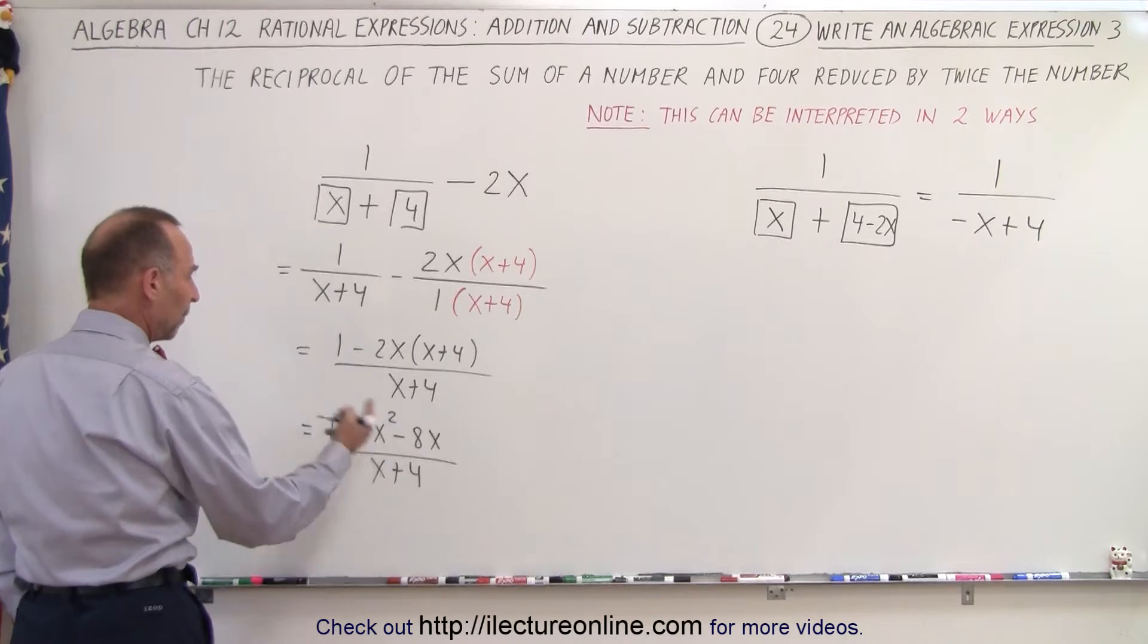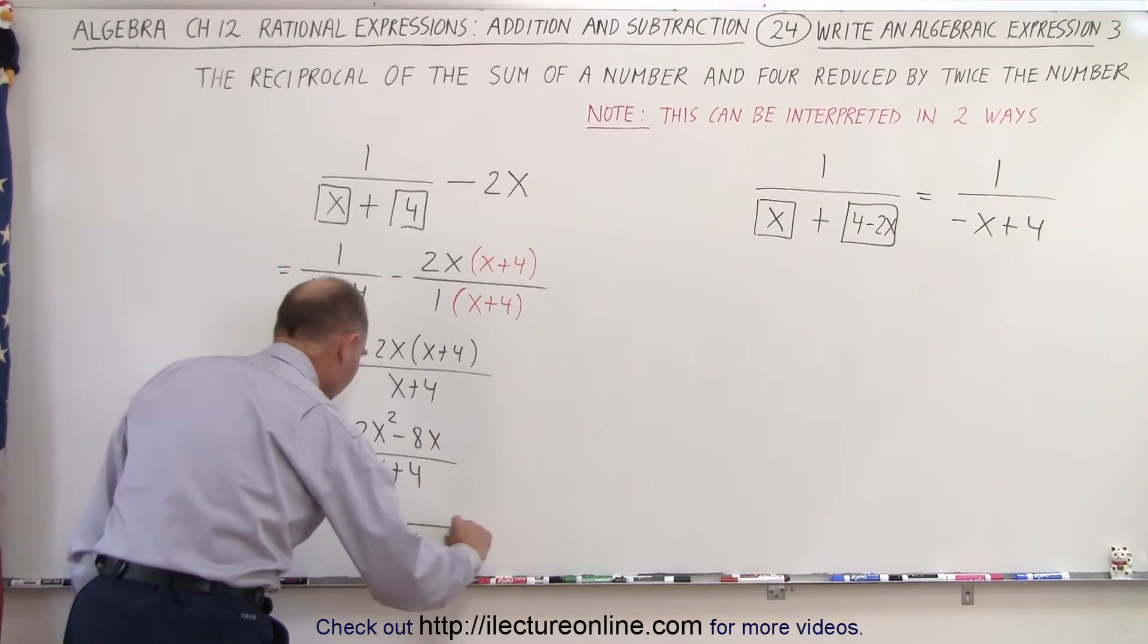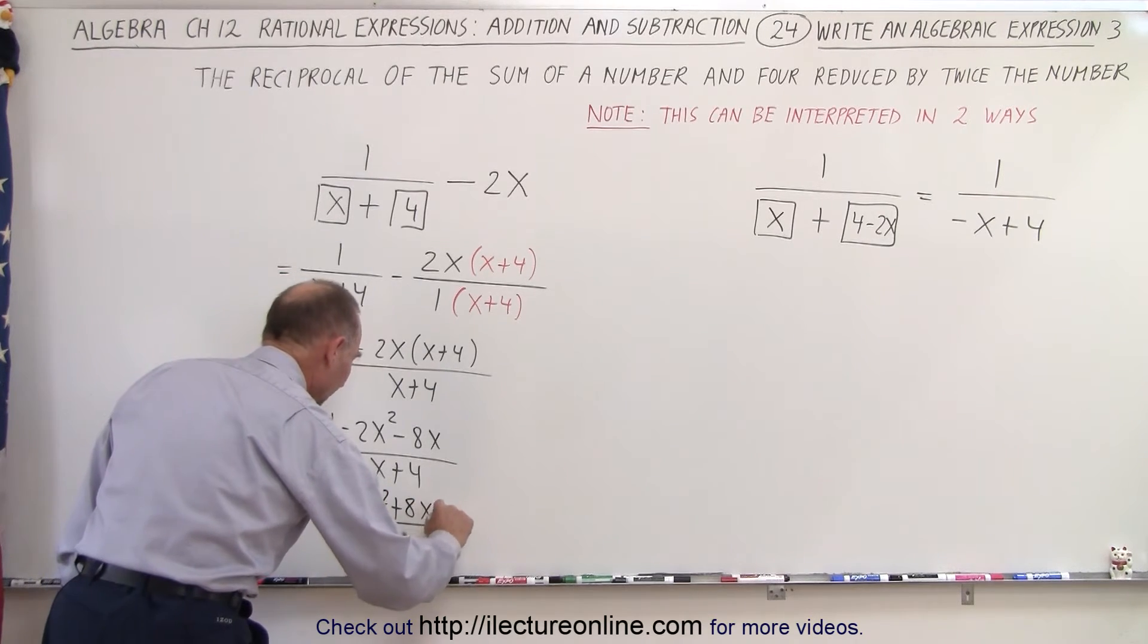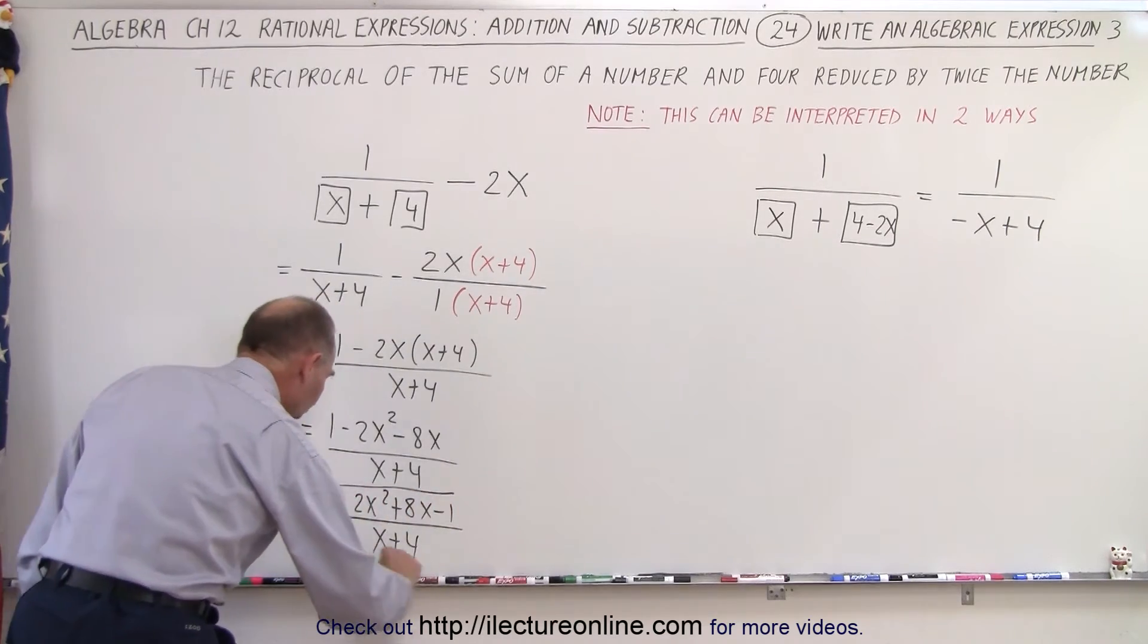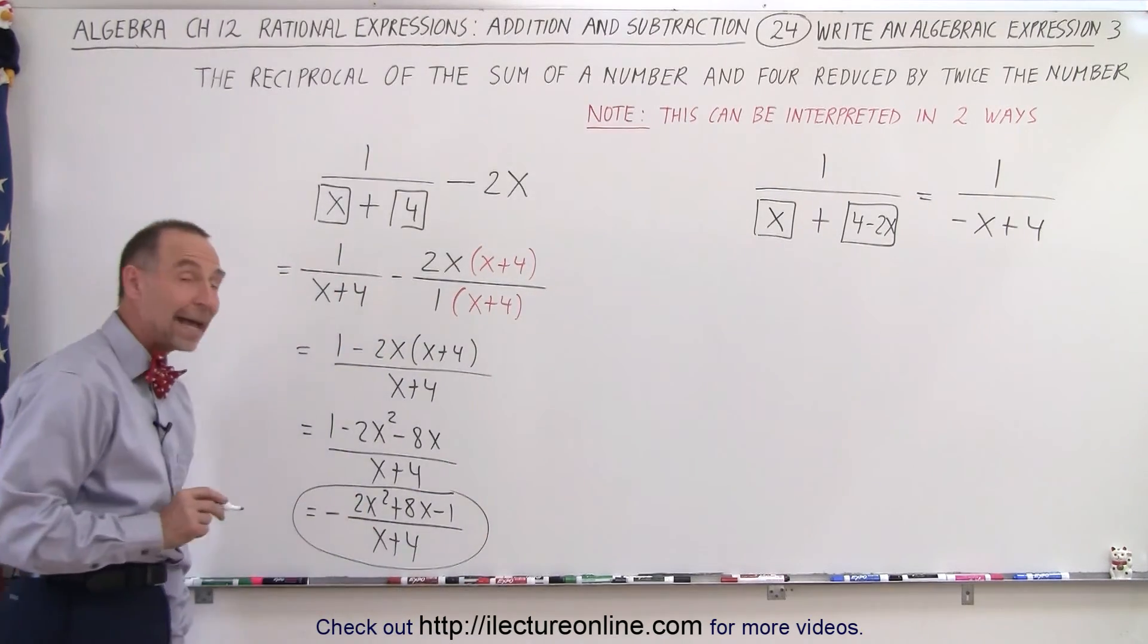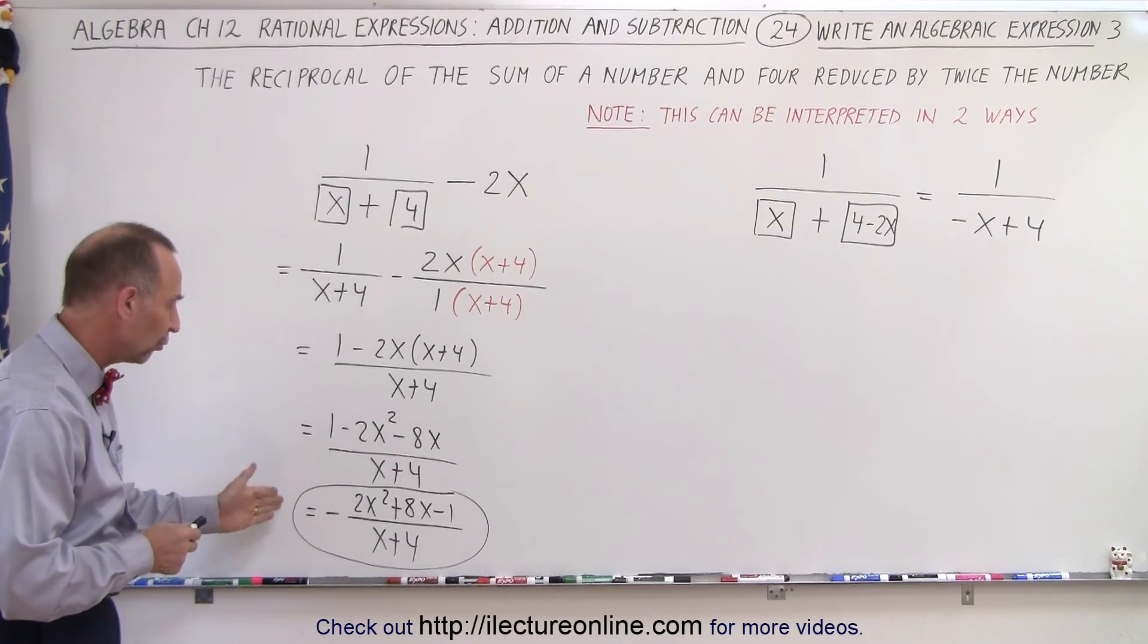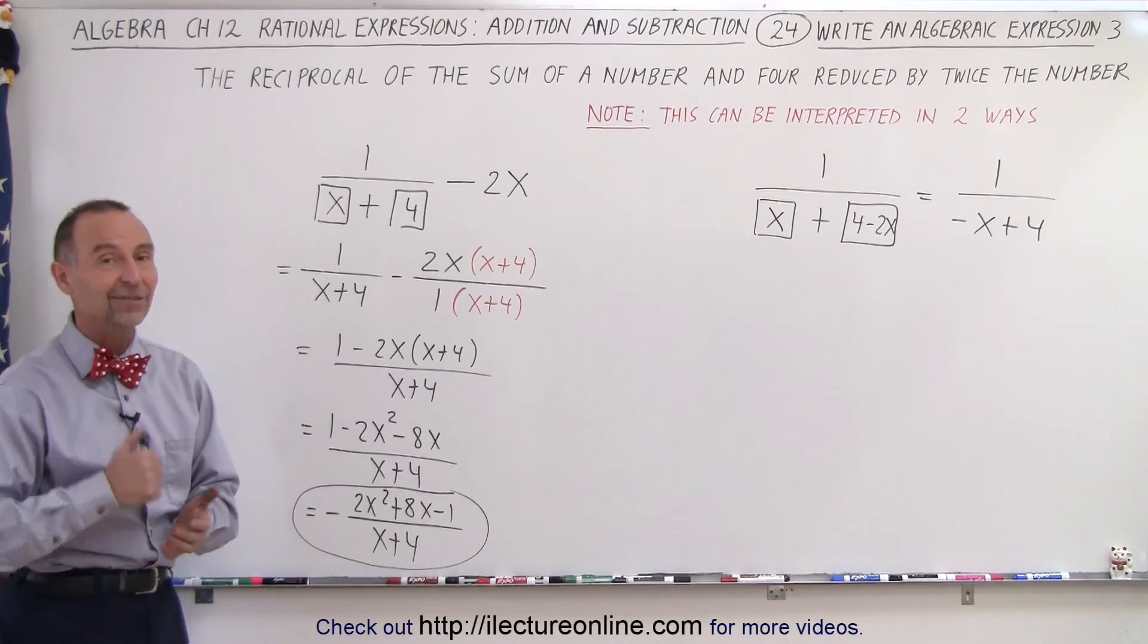And finally when I pull out a negative sign this can be written as minus 2x squared plus 8x minus 1 over x plus 4, because we always like to write the x squared term as a positive term if possible. And so that's the most reduced form of this original expression. And that is how it's done.